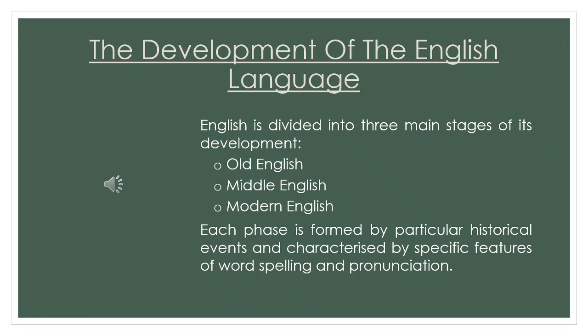The history of the English language is a complicated one, mainly because it is inevitably linked with the history of Britain and its inhabitants. Languages, like populations, are influenced by wars, invasions, immigration, trade, and many other factors. But in order to simplify the story of English, we often divide its history into three main phases.